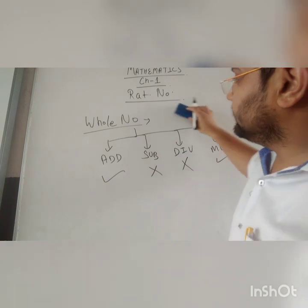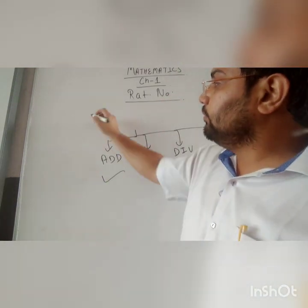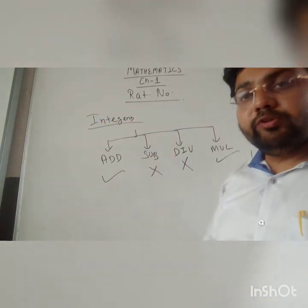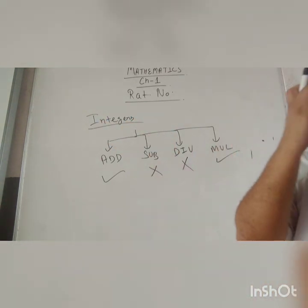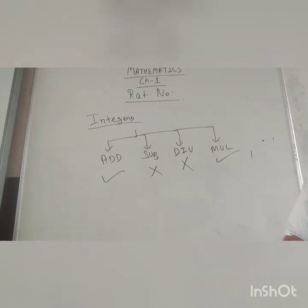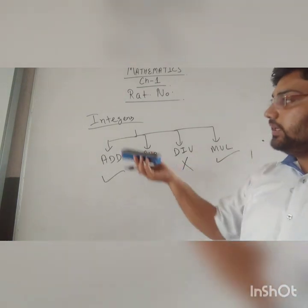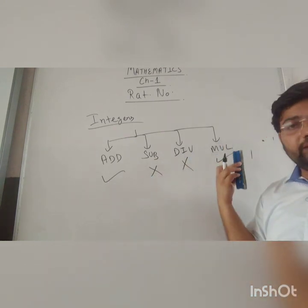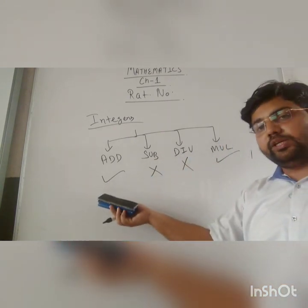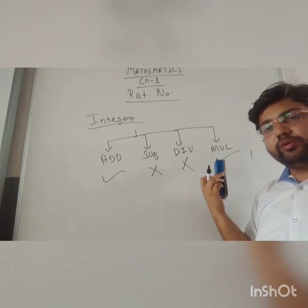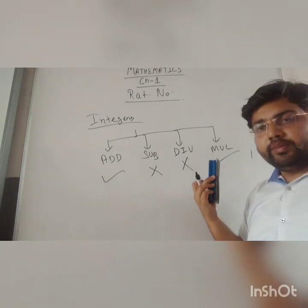Similarly, the same rule will be applied for integers as well. I think now you can all do it yourselves. In the case of integers, integers are associative under addition and multiplication: a plus b plus c equals a plus b plus c, and a into b into c equals a into b into c.